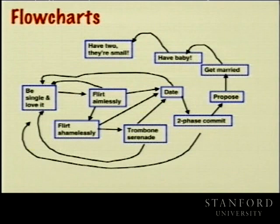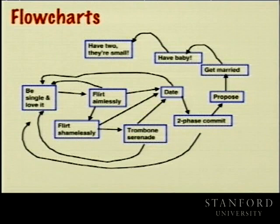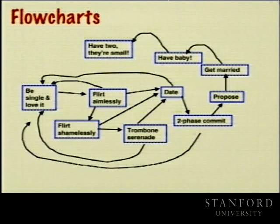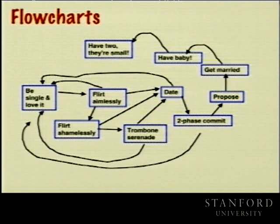Flowcharts have a lot of directionality — you're in this state and you can move to that state. For example, the life cycle of Stanford relationships: you start single and can flirt with various degrees of seriousness. Then there's a trombone serenade — you can't go back to flirting aimlessly after that; there's no arc in that direction. When somebody gets the trombone out, you take them seriously or blow them off. Then there's dating and two-phase commit. It turns out you don't get to go from 'flirt aimlessly' to 'have baby' — not allowed in this graph.